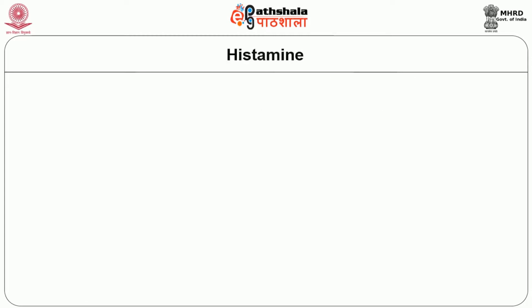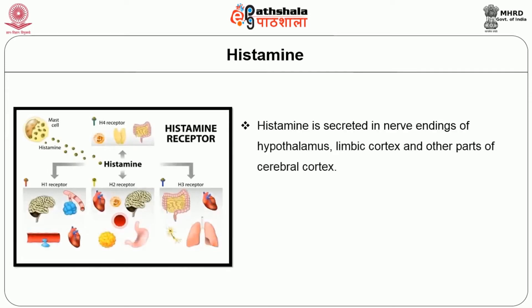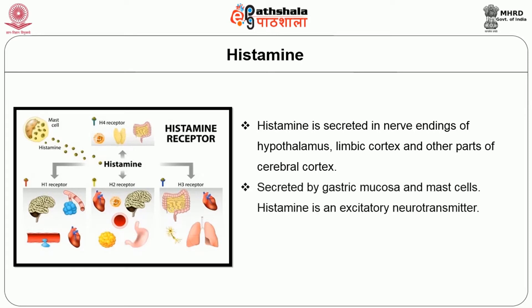Next we move on to histamine. Histamine is secreted in the nerve endings of the hypothalamus, limbic cortex, and other parts of the cerebral cortex. It is also secreted by gastric mucosa and mast cells. Histamine is an excitatory neurotransmitter and is believed to play an important role in the arousal mechanism.